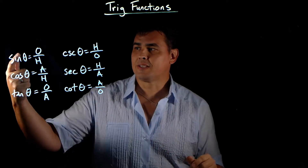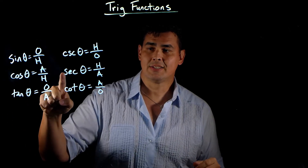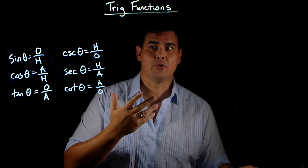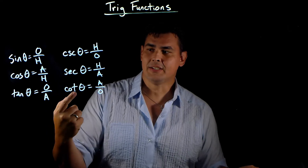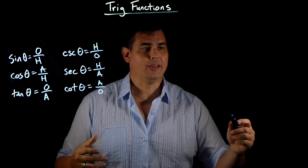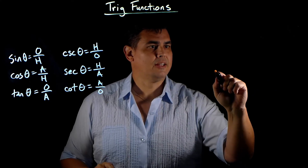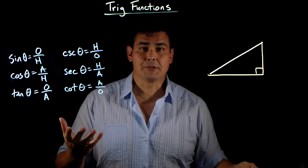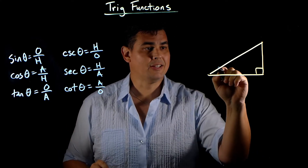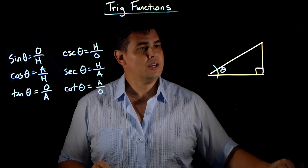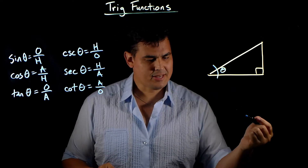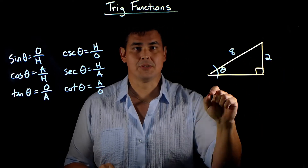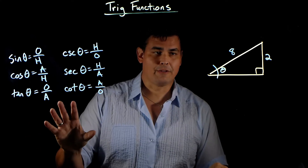Here are the trig functions: sine, cosine, tangent. I've written out cosecant, secant, and cotangent in their shorthand forms — CSC, SEC, and COT. Now let's do an example. Let's say I've got a triangle with a 90 degree angle. I need to pick angle theta. Let's say the opposite side is 2 and the hypotenuse is 8, and I don't know what the adjacent side is. We're going to solve for all of the trig functions.